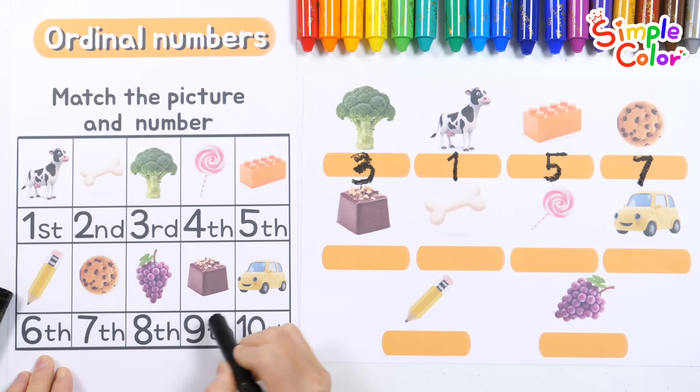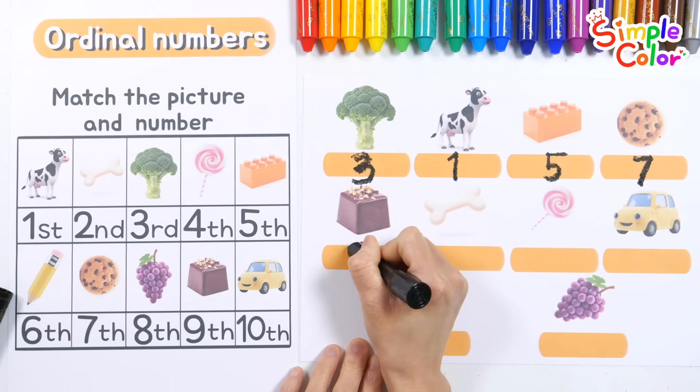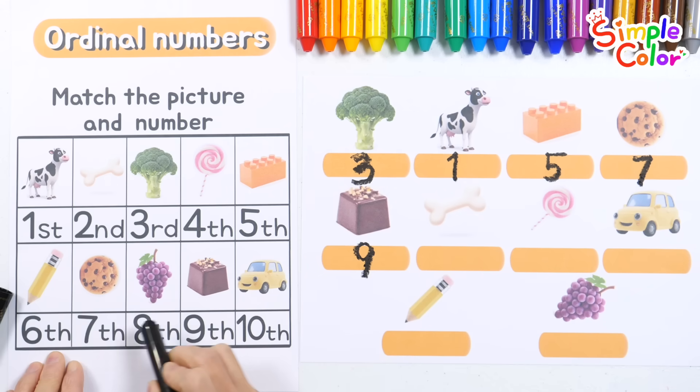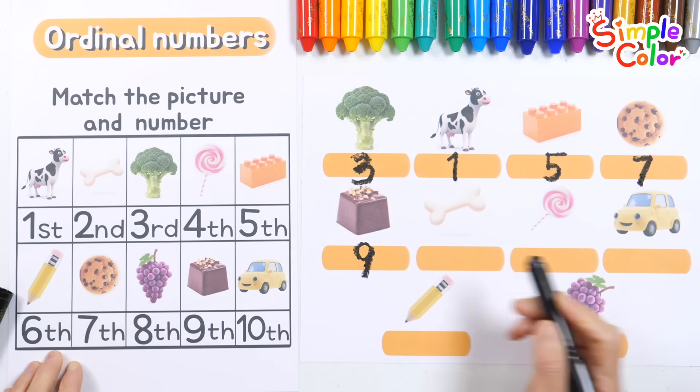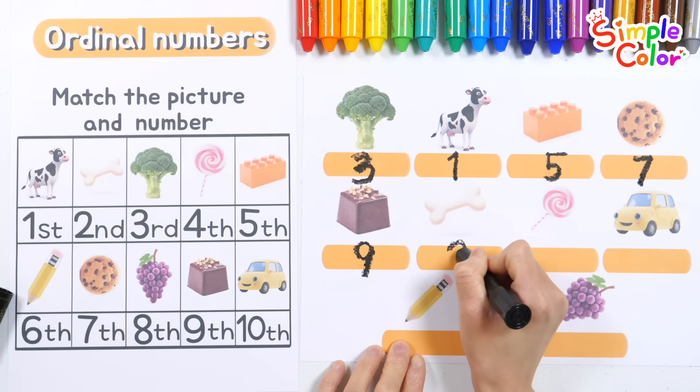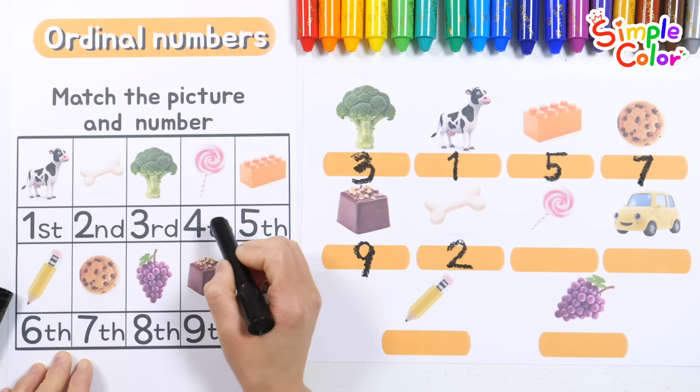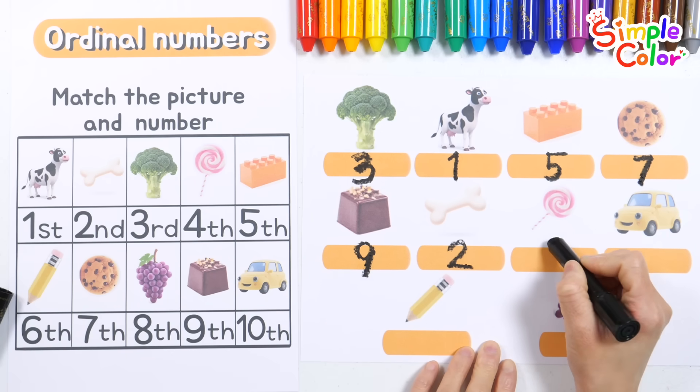The chocolate was ninth. Nine. The dog bone was second. Two. Which number was the candy? The answer is fourth. Four.